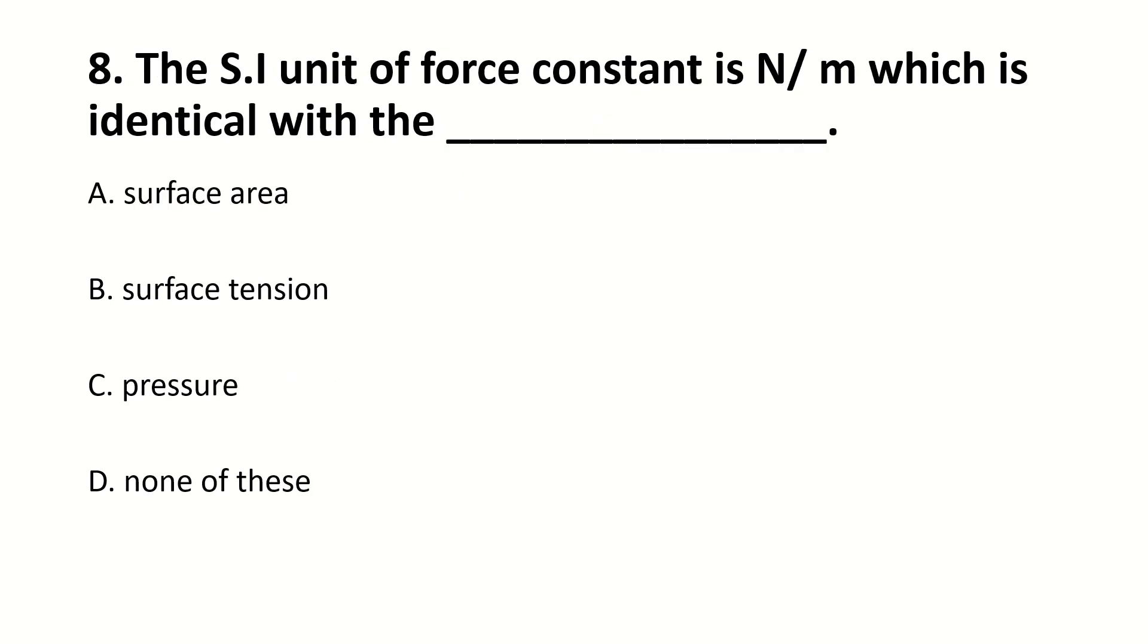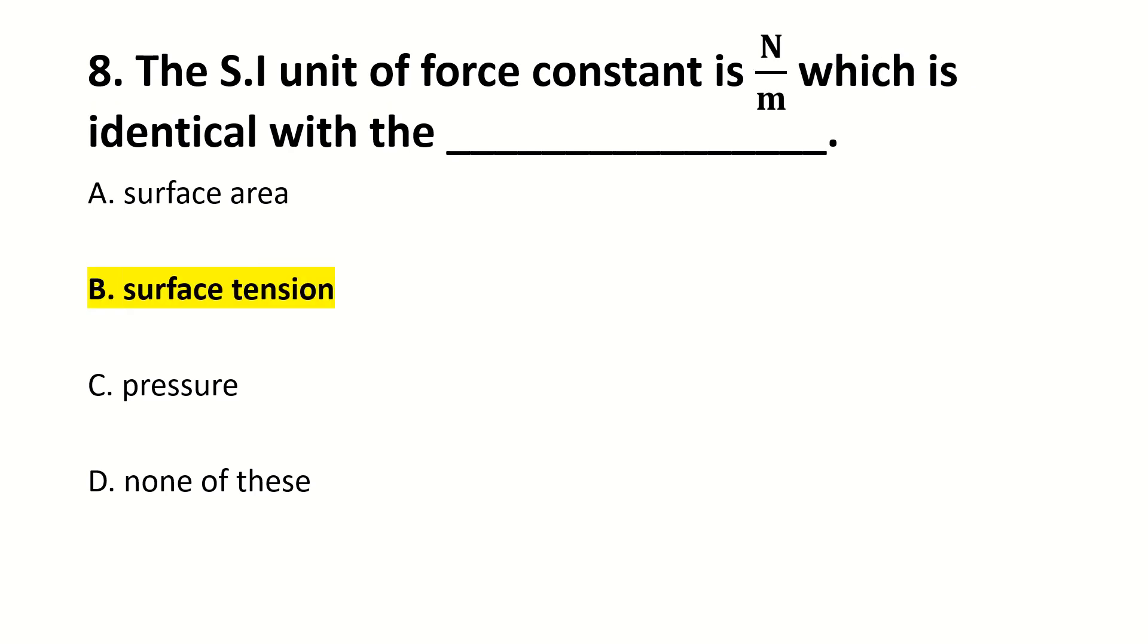SI unit of force constant is Newton per meter, which is identical with dashed. Right answer is B: Surface tension.